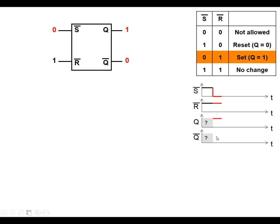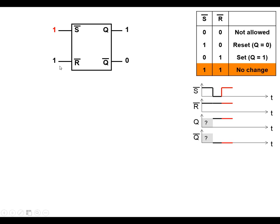And Q-bar is going to go low. Q-bar will always be the opposite of Q. S goes high, which gets us into the no-change state, so the output stays the same. We're going to make R-bar go low — so the reset input goes low — and it's going to reset Q low, and Q-bar back to being high again.